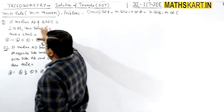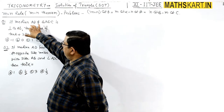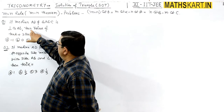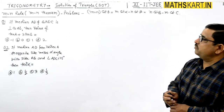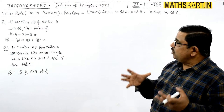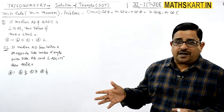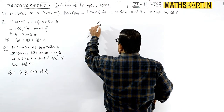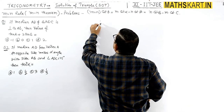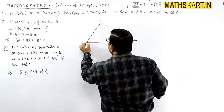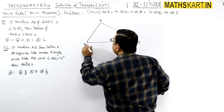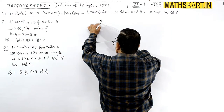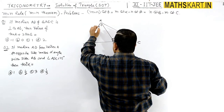So these are the problems. Question number one: if median AD of triangle ABC is perpendicular to AB, then the value of tan(A) + 2·tan(B) is required. If the median is AD and it is perpendicular to AB, this angle is 90 degrees.